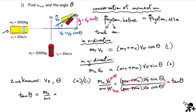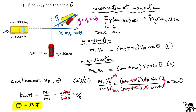Substituting values: mass of the car is 2,000 and mass of the truck is 3,000, giving tangent(θ) = 2,000/3,000 = 2/3. Taking the inverse tangent, theta is approximately 33.7°. That's how we find the angle.